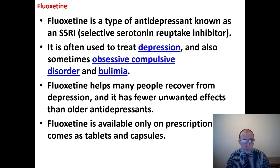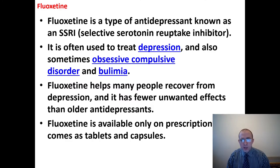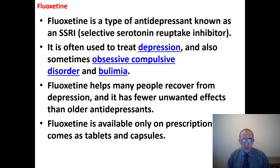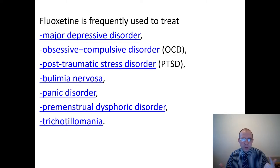Let's talk about fluoxetine. Fluoxetine is a type of antidepressant known as an SSRI — selective serotonin reuptake inhibitor. It is often used to treat depression and also sometimes obsessive-compulsive disorder and bulimia. Fluoxetine helps many people recover from depression and it has fewer unwanted effects than older antidepressants. Fluoxetine is available only on prescription and comes as tablets and capsules. It is frequently used to treat obsessive-compulsive disorder, post-traumatic stress disorder, bulimia nervosa, panic disorder, premenstrual dysphoric disorder, and trichotillomania.